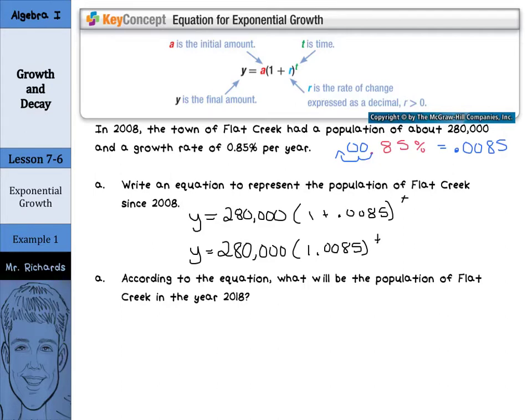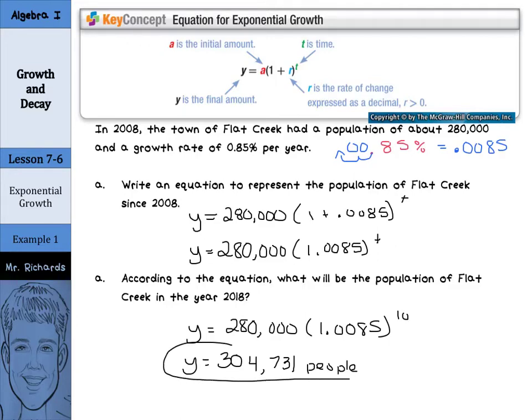Well, 2018 is 10 more years, and so we'll go y equals 280,000 times 1.0085 to the tenth power. When you take that to the tenth and multiply it by 280,000, you'll get about 304,731 people. And that is our answer.